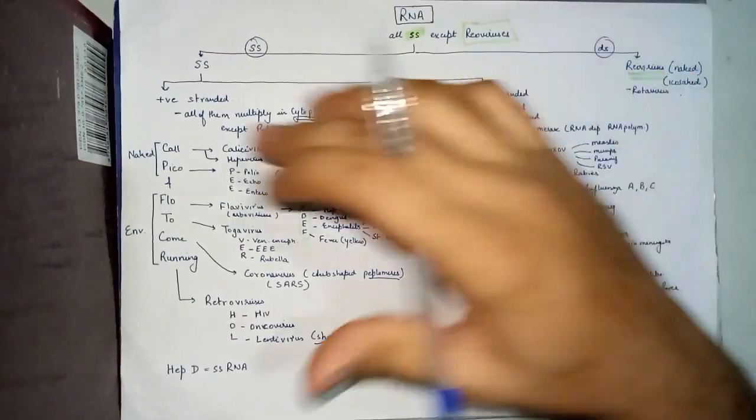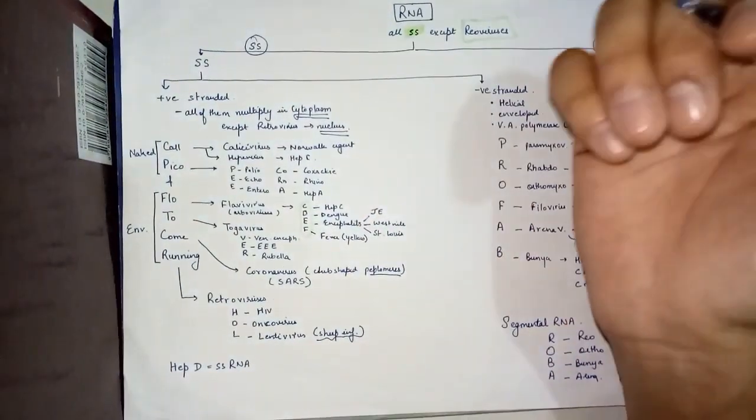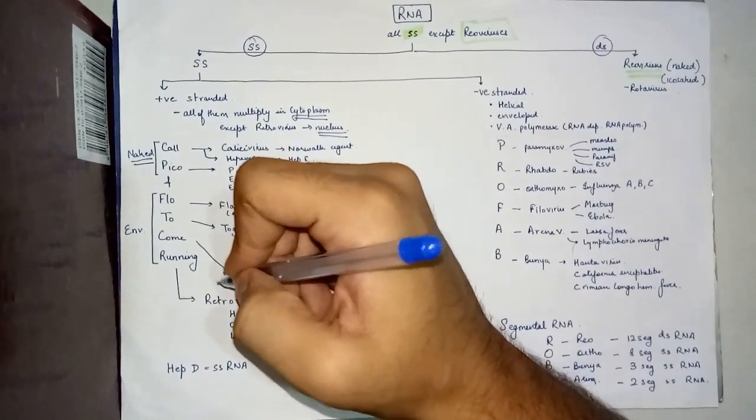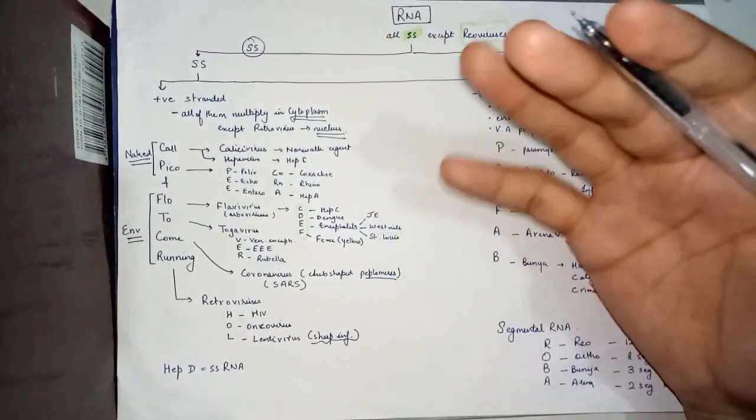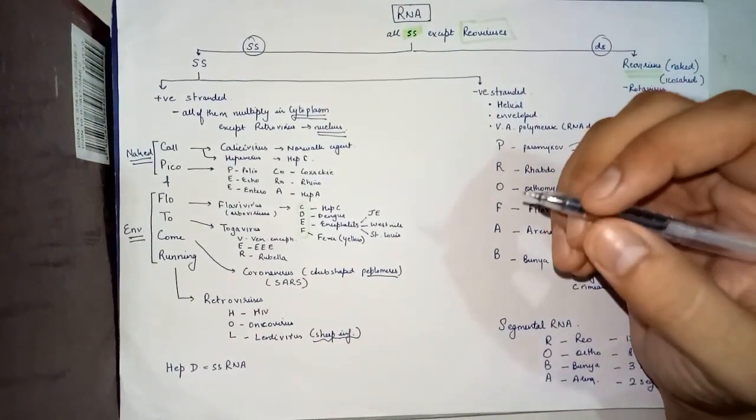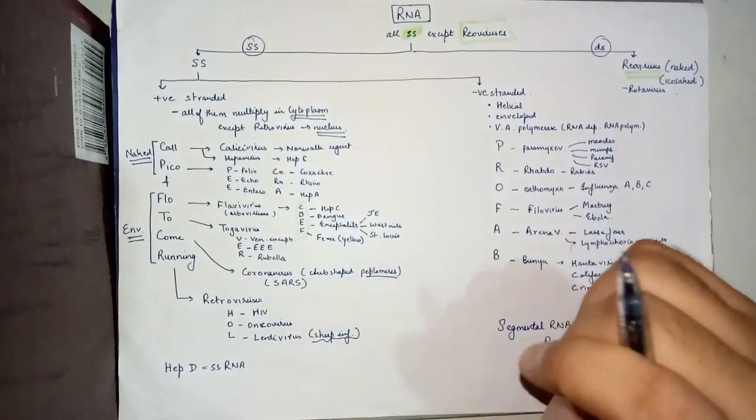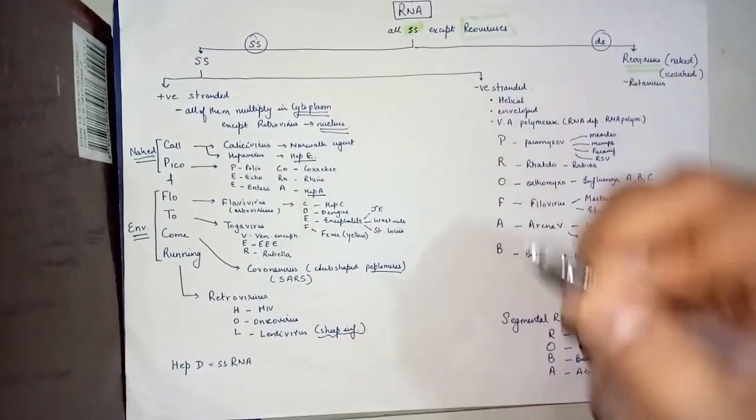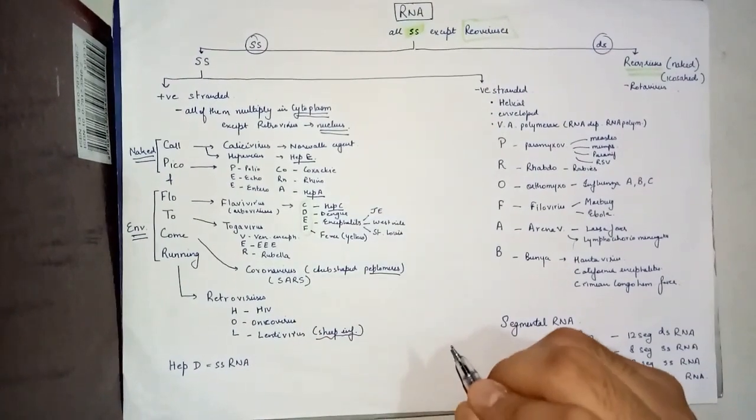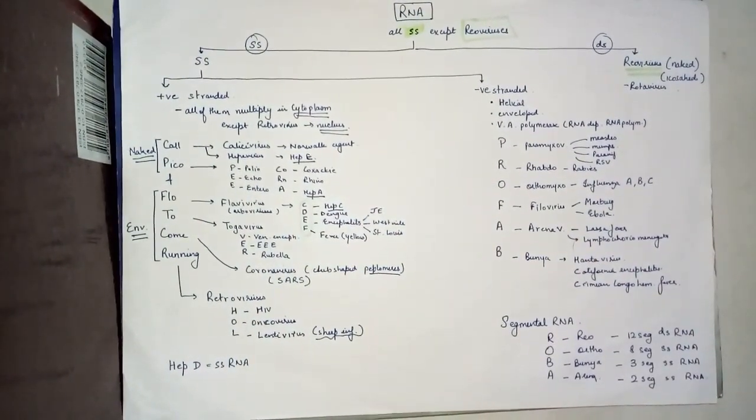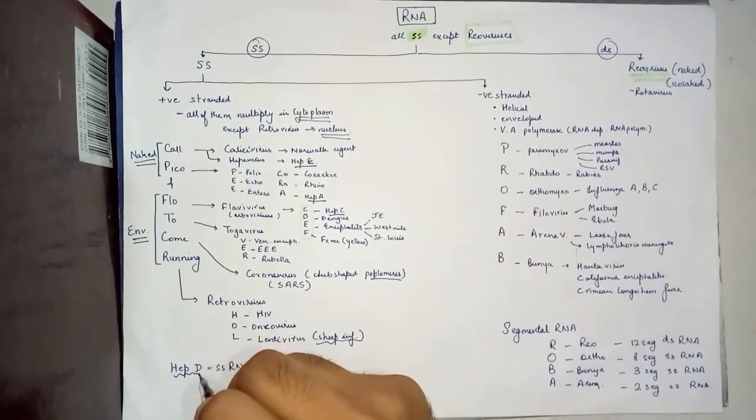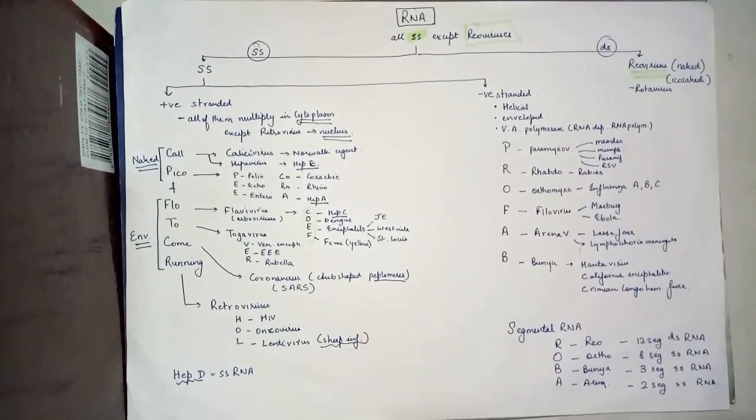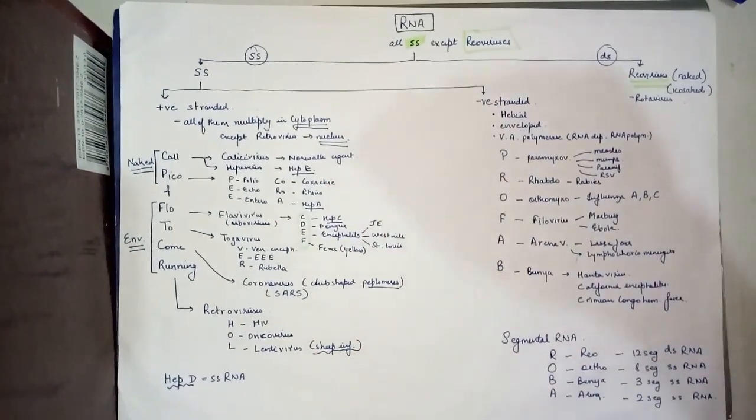The important thing is that we divided it in such a way because it'll be easier for us to memorize that Cal and Pico are naked viruses and the other four categories become the enveloped viruses. Now we covered most of the hepatitis viruses. We have hepatitis E here, hepatitis C is a flavivirus, hepatitis B we saw was a DNA virus. One of the hepatitis viruses that is left is hepatitis D. The important thing about hepatitis D is that it needs hepatitis B to cause infection and it is a defective virus, not usually classified into any of these categories. It's a single stranded RNA virus.